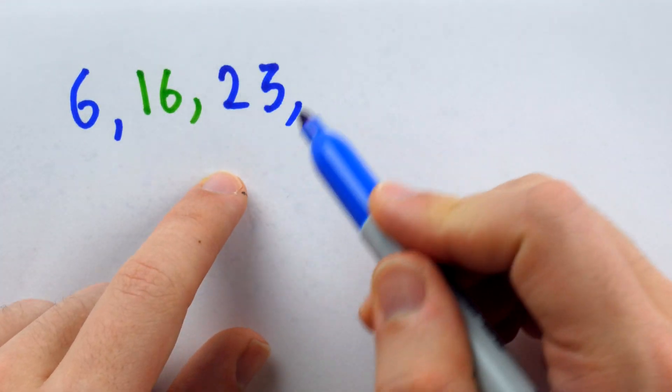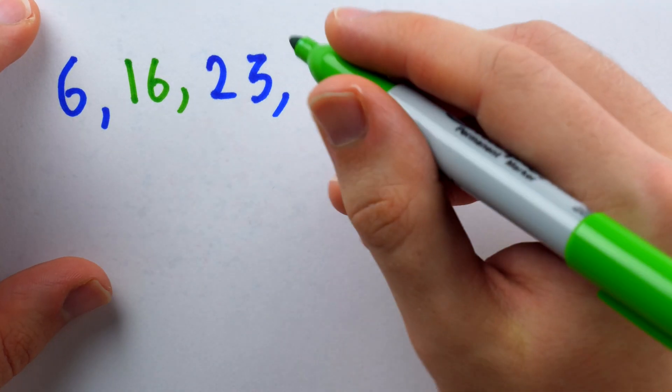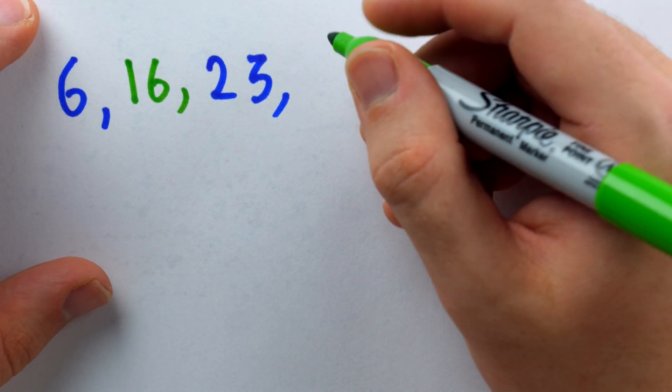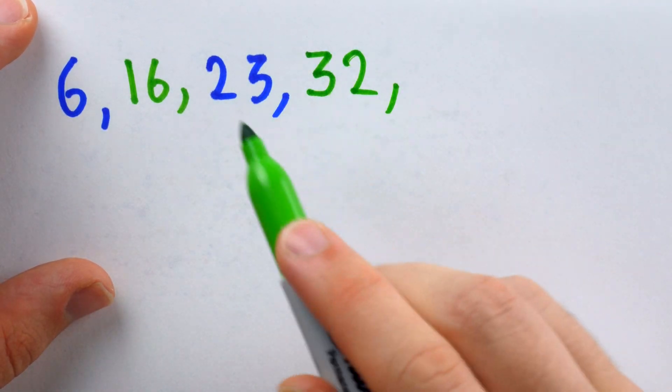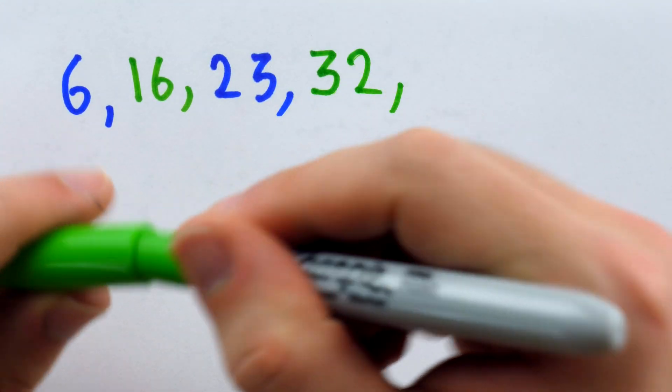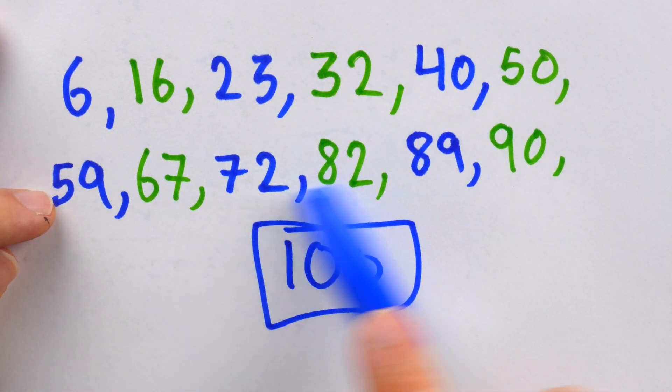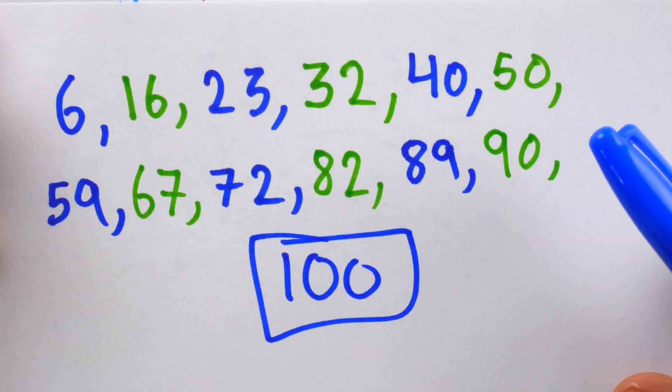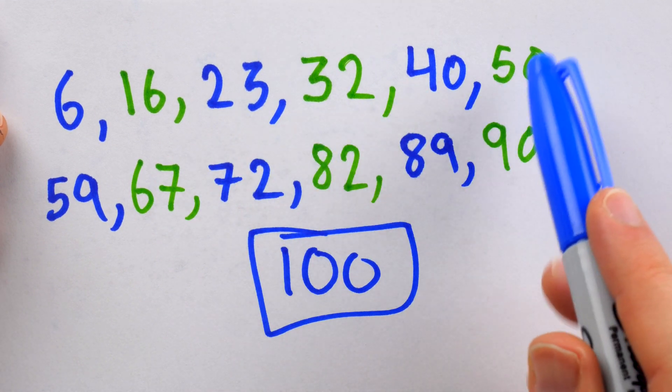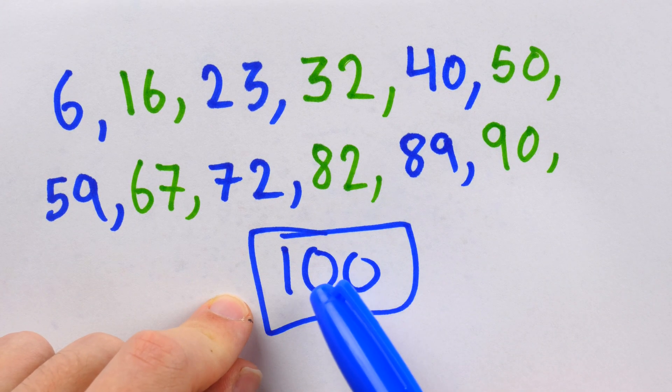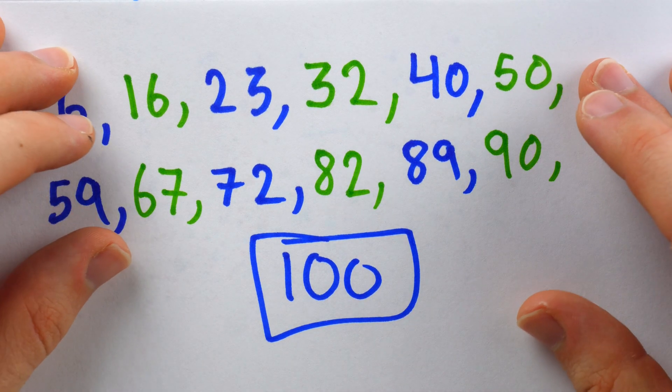The first player to get the subtotal to 100 would be the winner of the game. So, let me just continue writing out a possible sequence of states in this game. The second player could then add 9 to get us to 32. And we continue in this way until a winner is determined. So, here's a potential sequence of game states where each player is choosing a number between 1 to 10 to add to the subtotal in each turn. And once we get to 100, that's the blue player who has got us to 100 and thus they are the winner. So, that's how the game works.